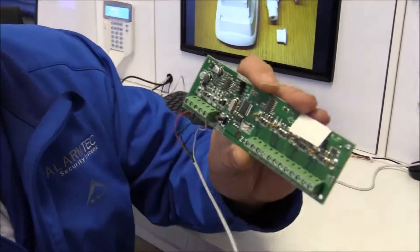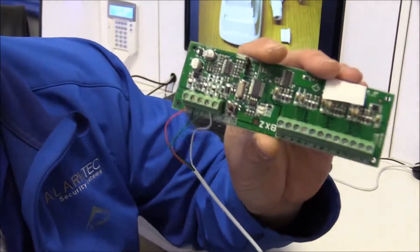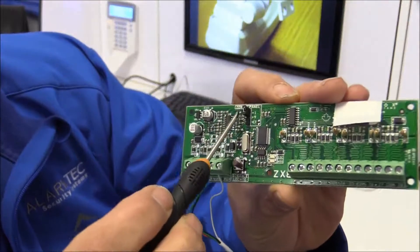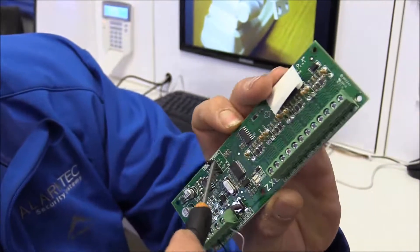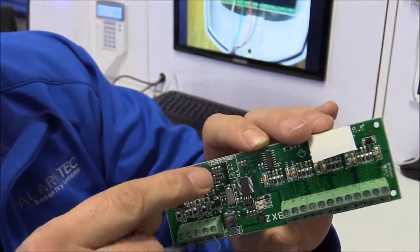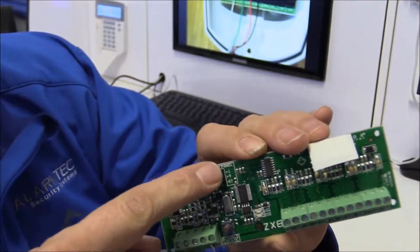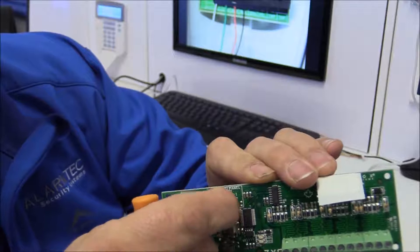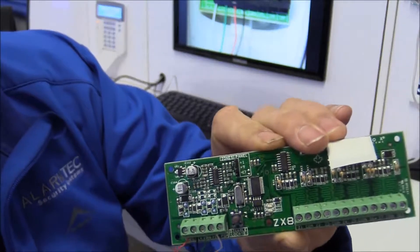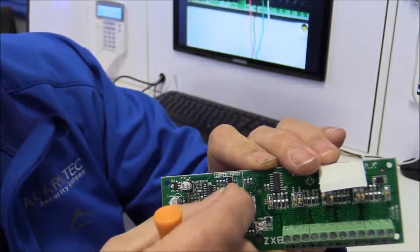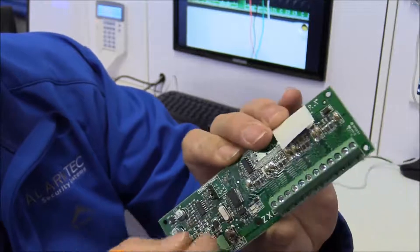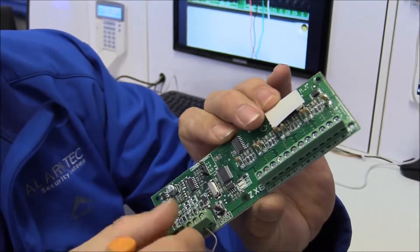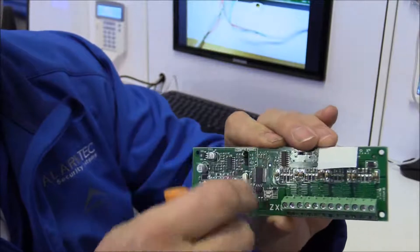I just want to show you something, another thing on this expansion board. You'll see this jumper selection here with a plus one, plus nine and a 17. For your first expander, plus one. Second expander, you're going to remove the jumper and put it at plus nine. And if there's a third expander, you're going to put it at plus 17. So we're going to be starting with the first expander.